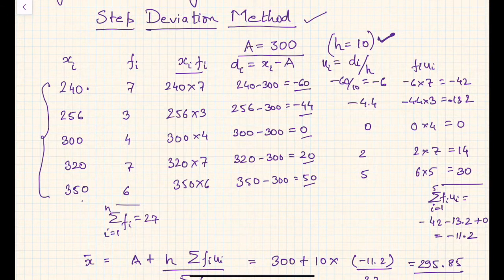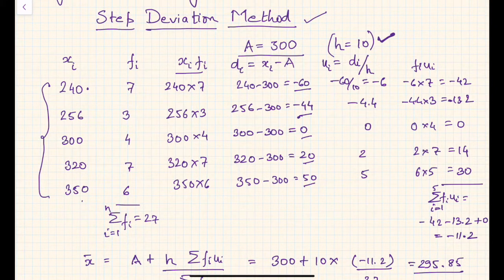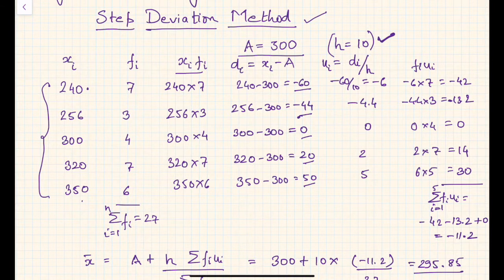So we have divided all the di's by h so that all these numbers are further reduced. If you can see, minus 60 is reduced to minus 6, and minus 44 reduces to minus 4.4, and so on. Now multiplying these ui values with frequency values is much easier than multiplying the frequency values with either di's or xi's themselves. Hence the calculation becomes much simpler when computing fi*ui.